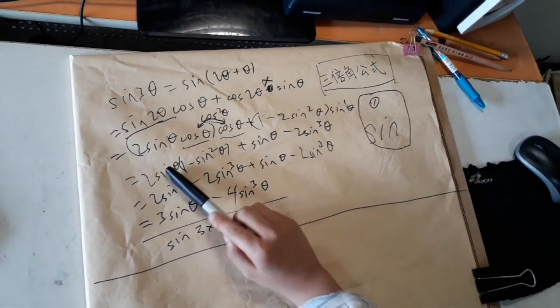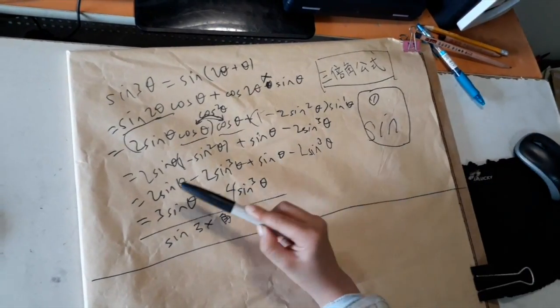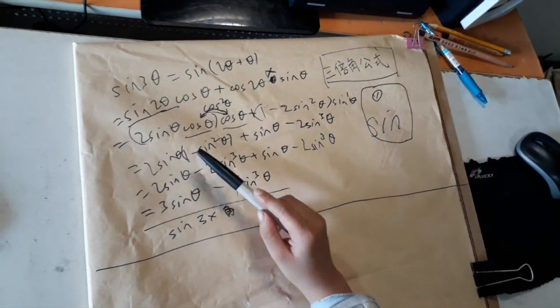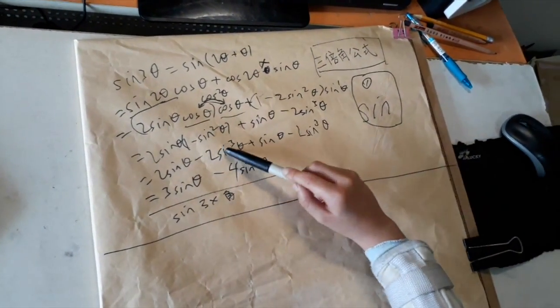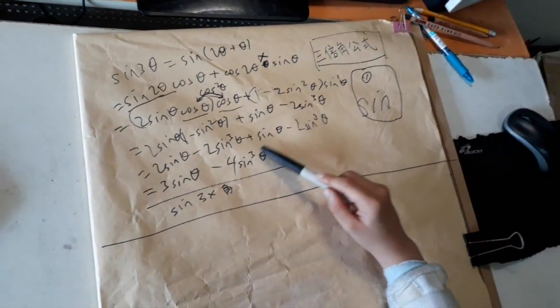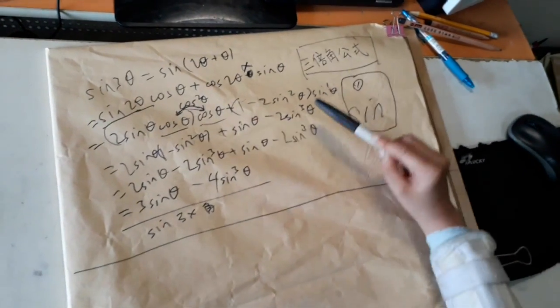So now let's do one more factorization here. 2 sine theta times 1 is 2 sine theta. 2 sine theta times sine squared theta is 2 sine cubed theta. And now we're just going to combine everything.